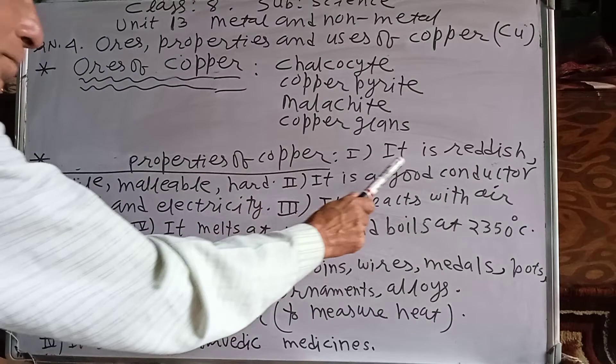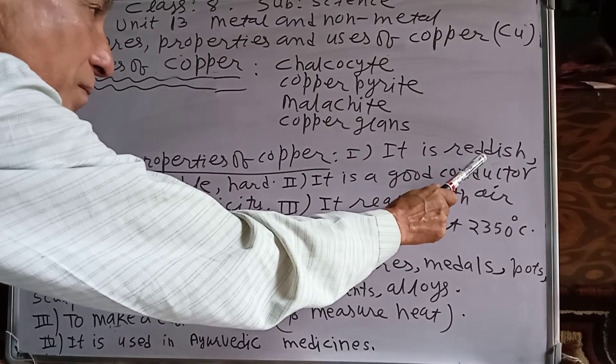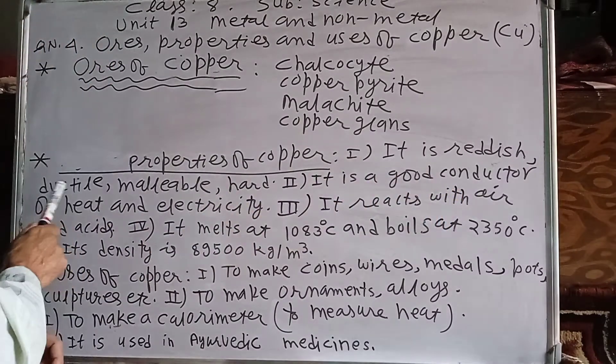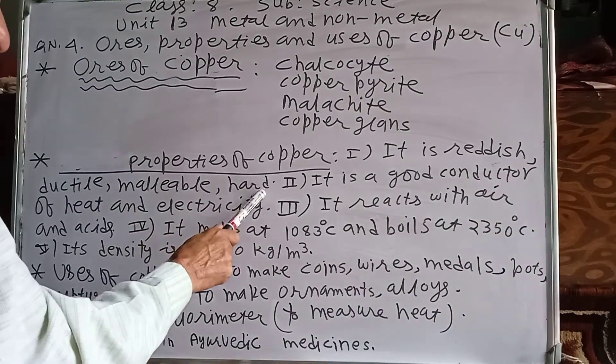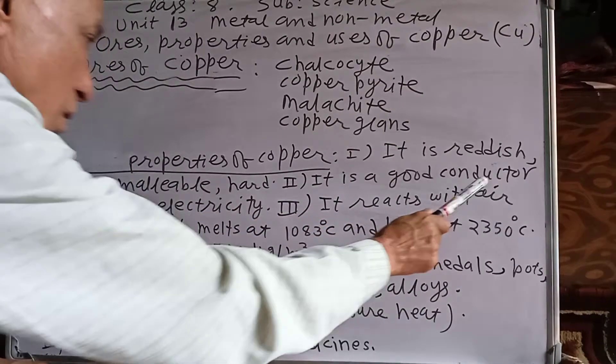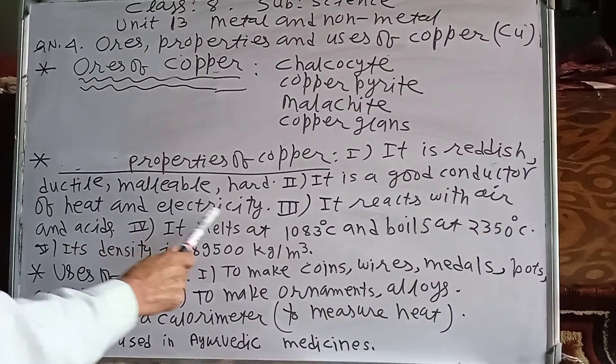Properties of copper. It is reddish or brown, ductile, malleable, hard. It is a good conductor of heat and electricity.